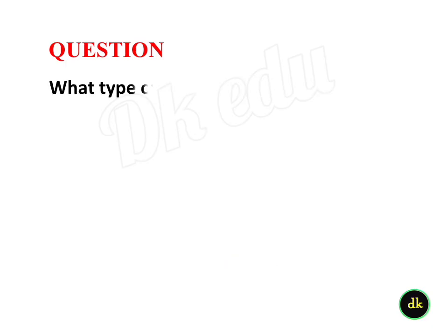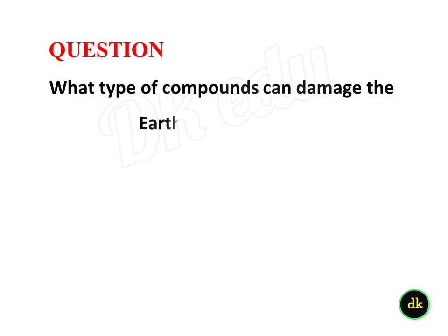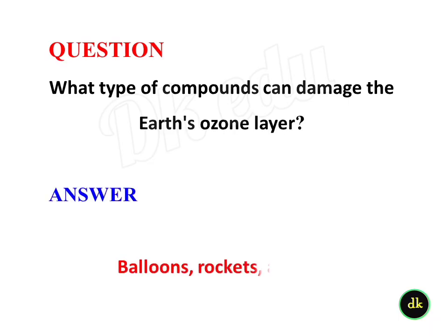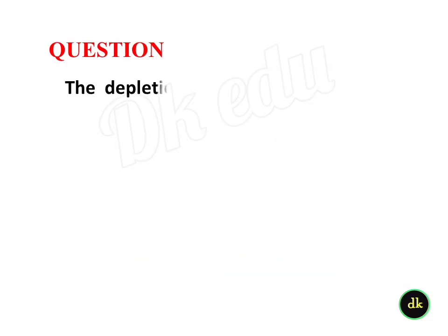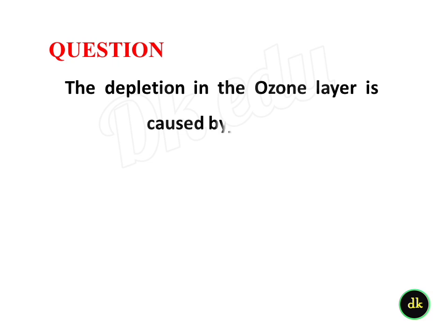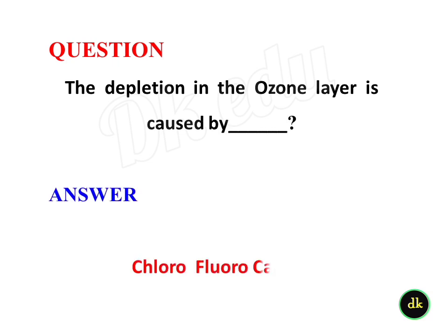What type of compounds can damage the Earth's ozone layer? They can be measured using balloon, rocket, and aircraft. The depletion in the ozone layer is caused by chlorofluorocarbons.